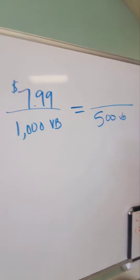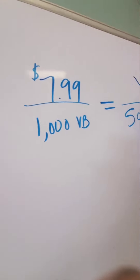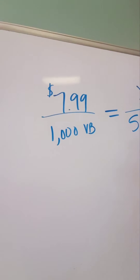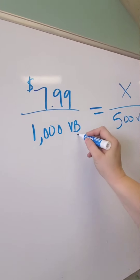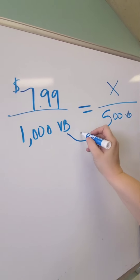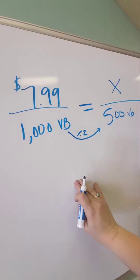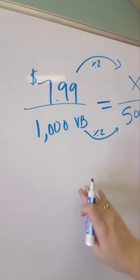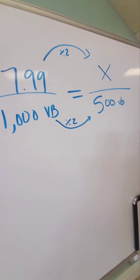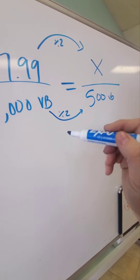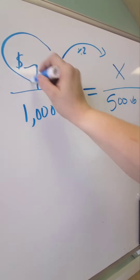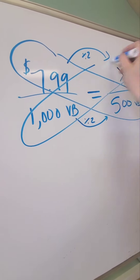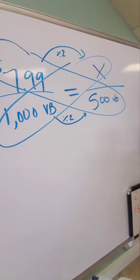How much it would be is my x — that's what I don't know. What I can do is say from here to here, what changed? Well, I divided it in half — I divided it by 2. So this one I'm also going to divide by 2. That is one way to do proportions. The other way is cross-multiplication — whatever this is equals whatever this is when you multiply it.